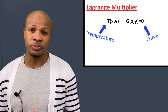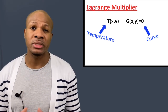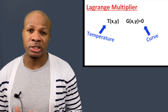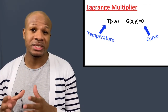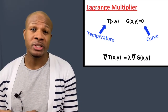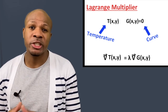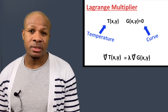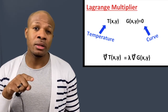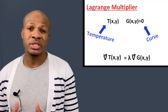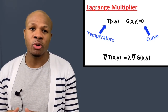Since G is constant on the region of confinement, G does not change as we move along the curve. If we move off the curve, G changes — so the gradient of G points directly away from the curve. This is exactly what we want the temperature gradient to do. When the gradient of T is directly proportional to the gradient of G, we are at a stationary point. The proportionality constant is called lambda — the Lagrange multiplier. The del symbol (∇) points in the direction of maximum increase, so ∇T = λ∇G.